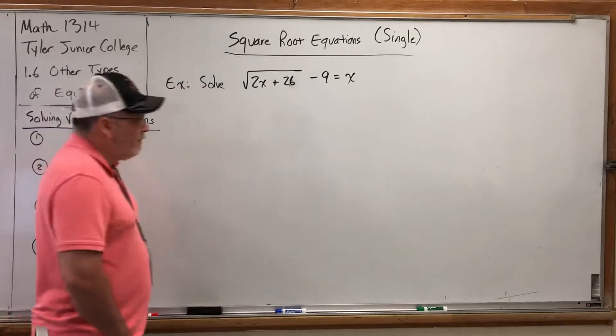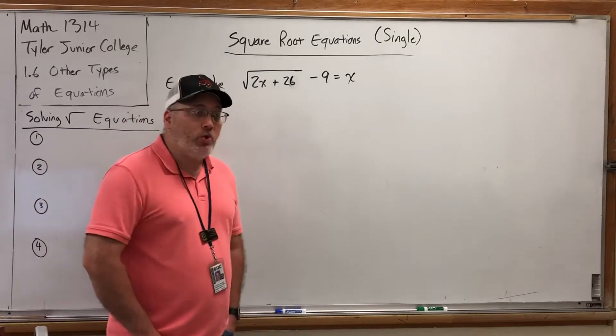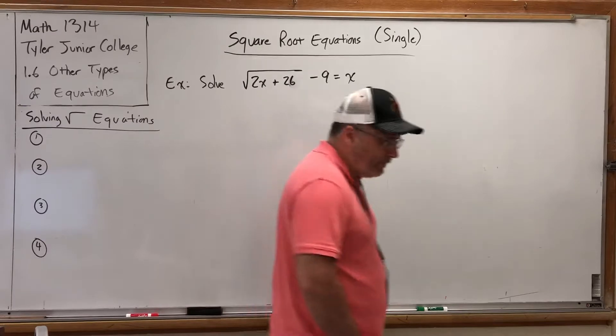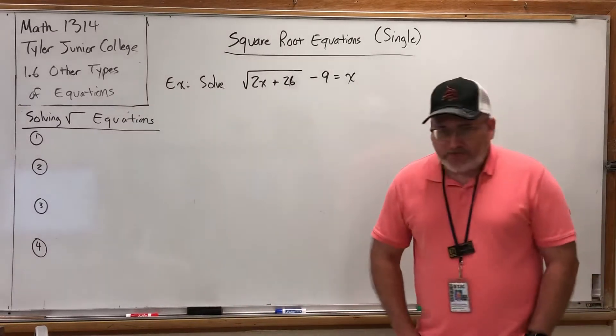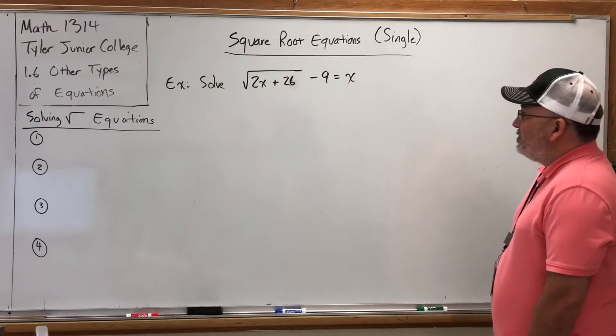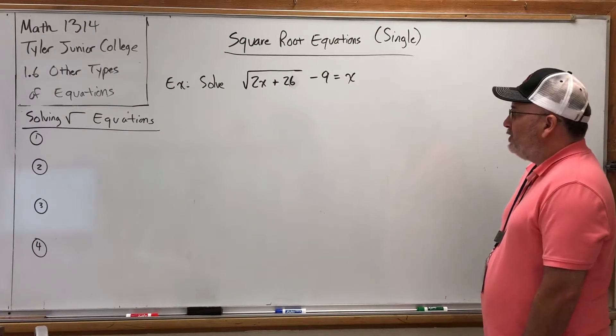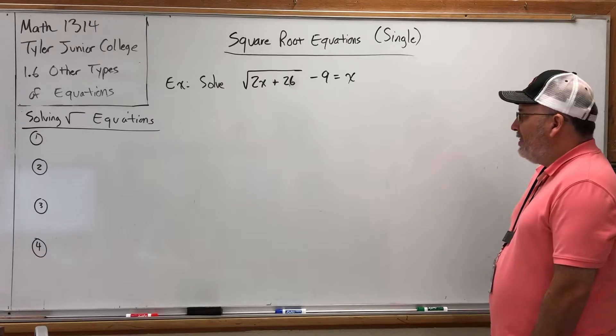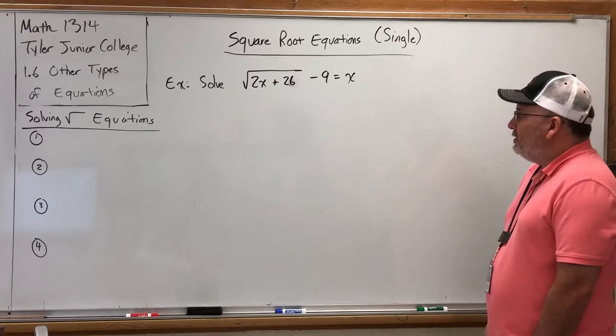What I mean by single is that there is only one square root in the equation. It's kind of foreshadowing that there might be more in the next video. For example, let's solve the equation of the square root of 2x plus 26 and then minus 9 equals x.